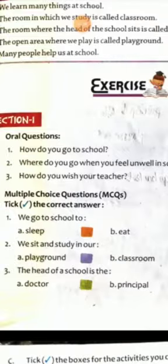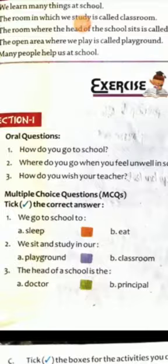Question 1: We go to school to — sleep, eat, or study? Option C: study. Question 2: Where do you sit and study? Playground, classroom, or assembly? Your answer is option B: classroom.